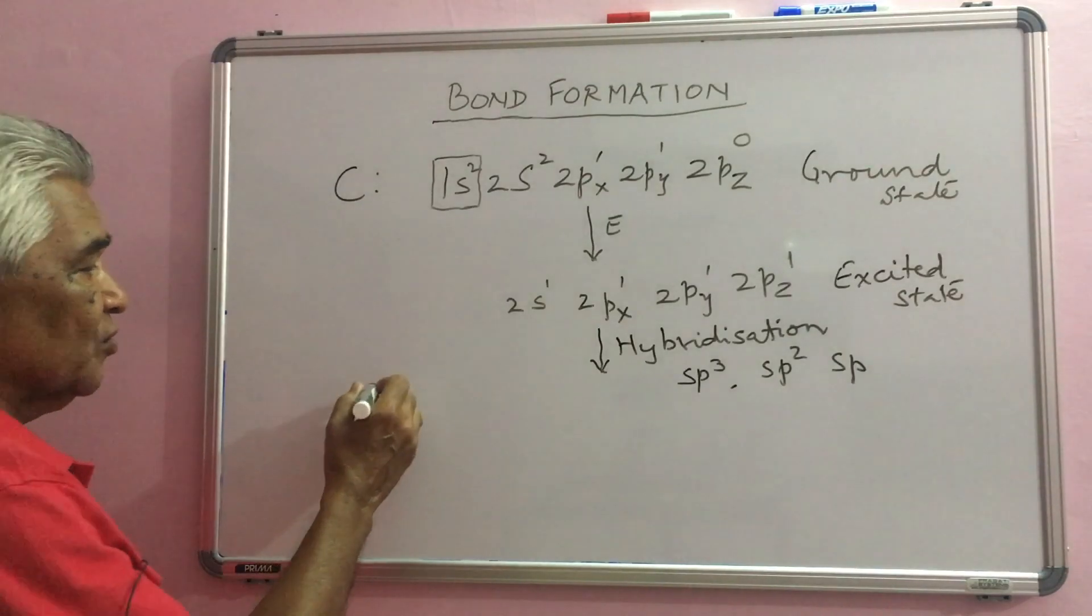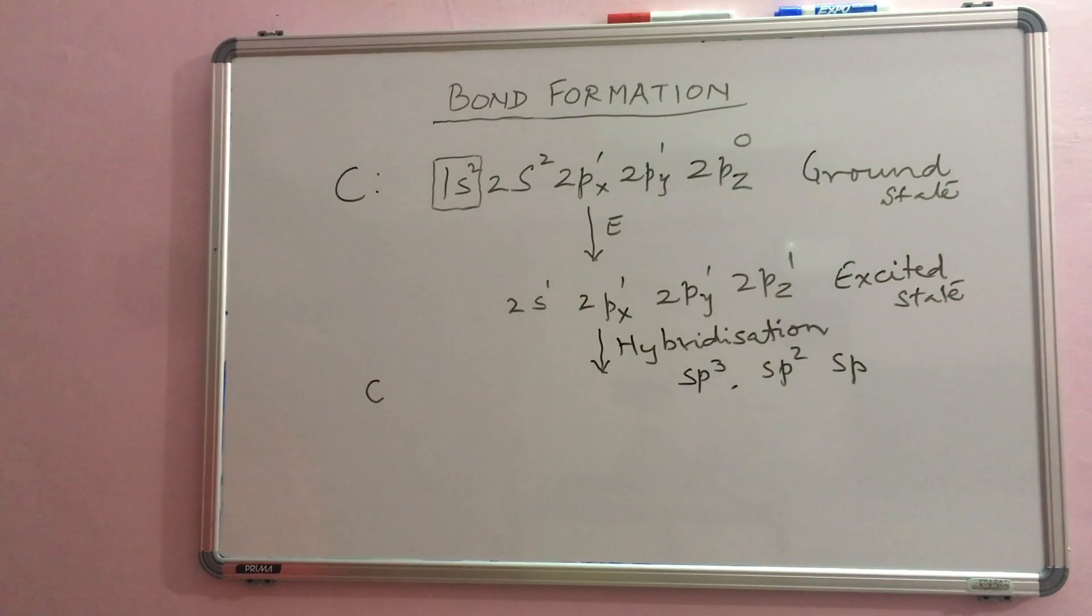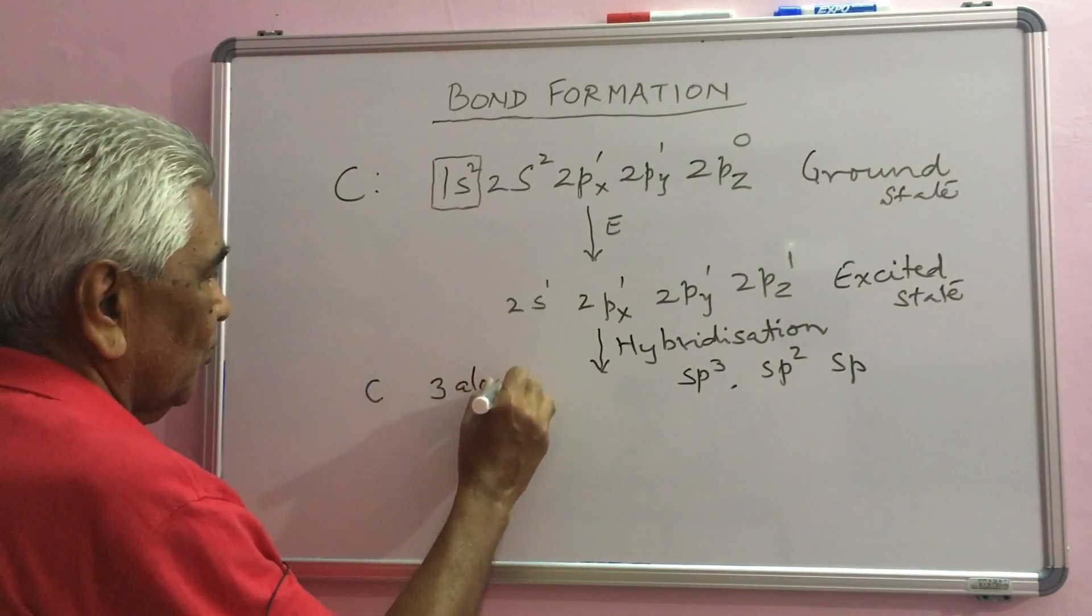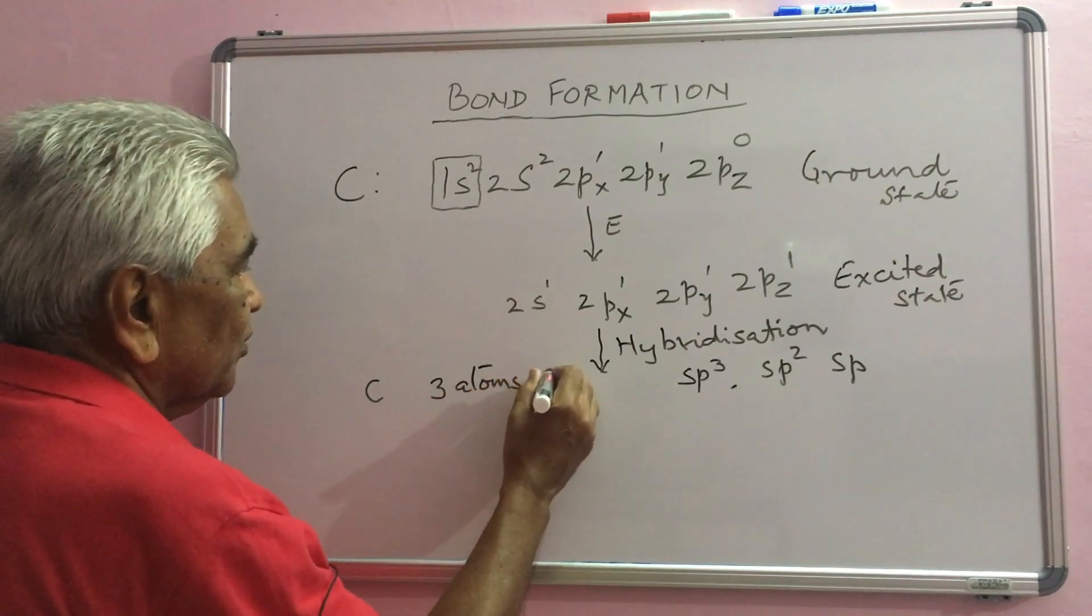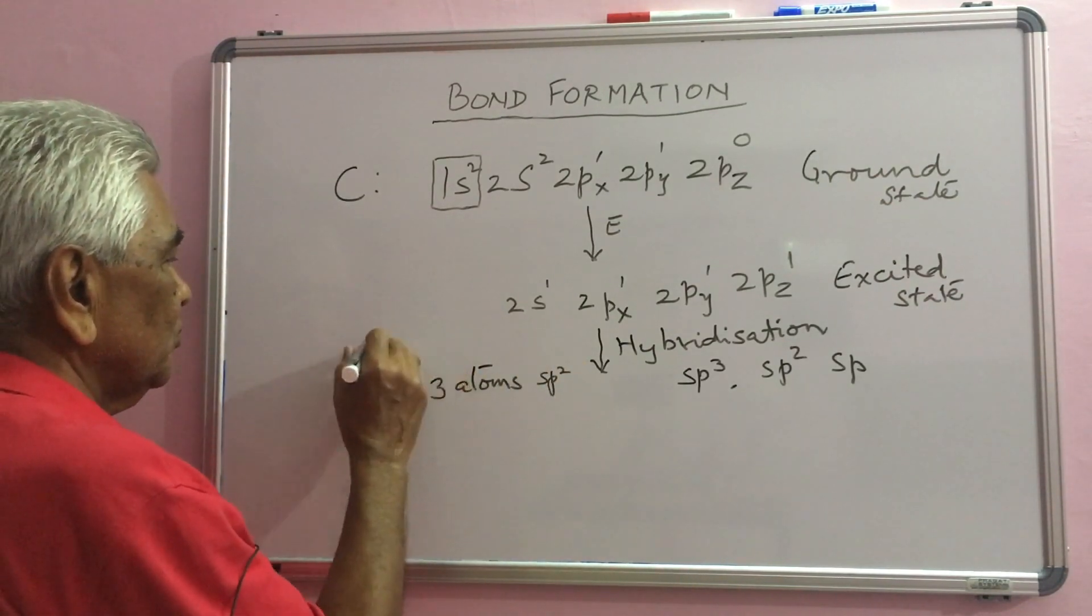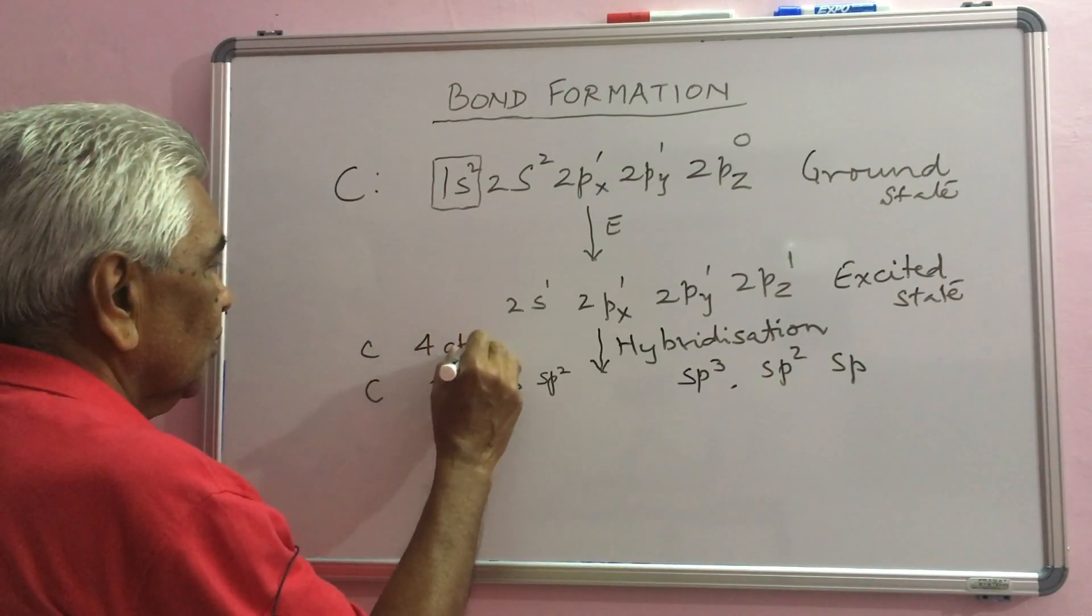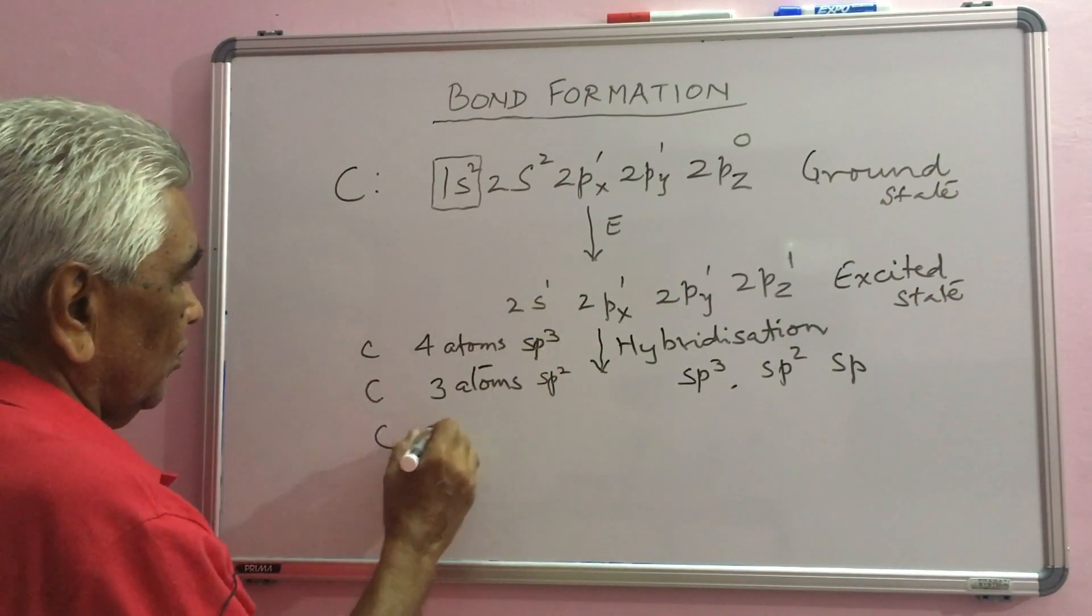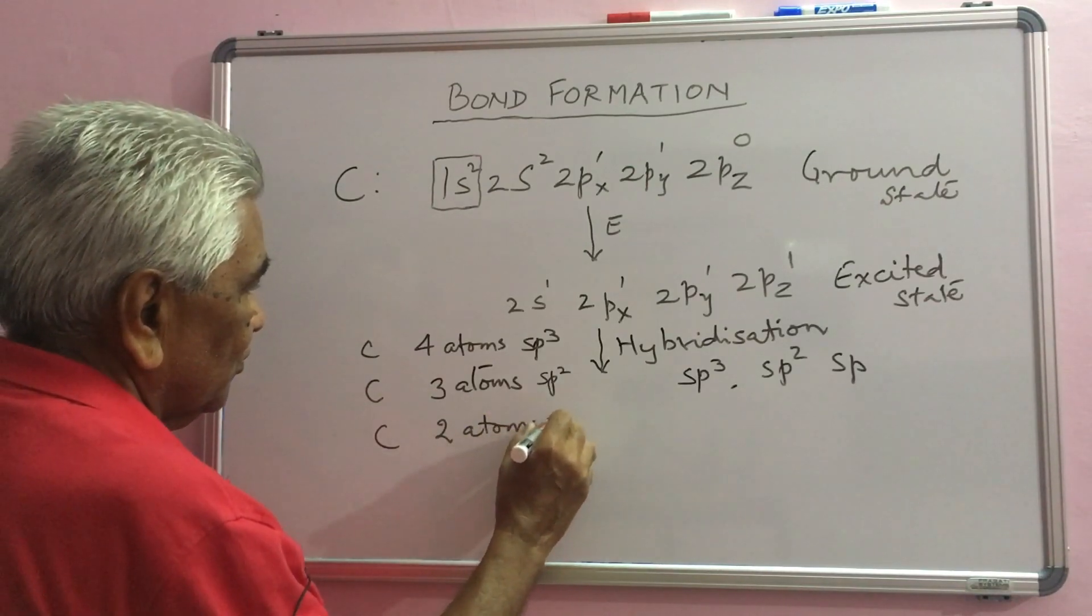When carbon has to form bonds with only 3 atoms, this is SP2 hybridization. When you decide to form bonds with 4 atoms, SP3. And when only 2 atoms, this is SP.